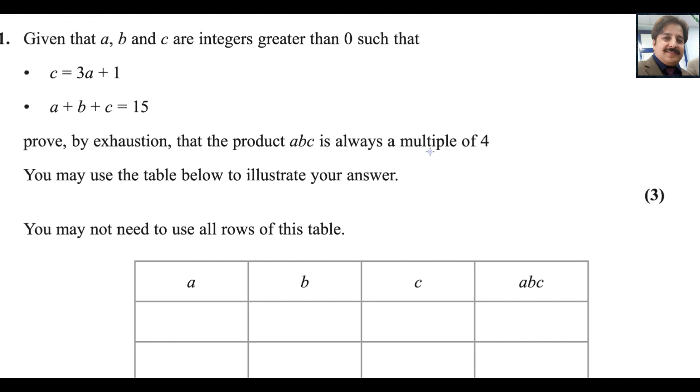We can take the values of a, b and c greater than zero. First, if you choose value of a as 1, value of c will be 3 times 1 plus 1, which equals 4. Now use the values of a and c in this equation: 1 plus b plus 4 equals 15. It is clear from this equation b is supposed to be 10.